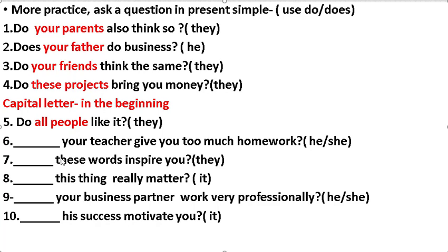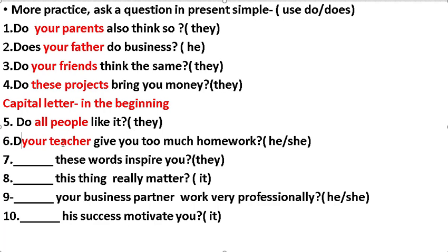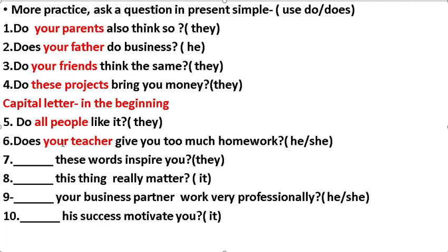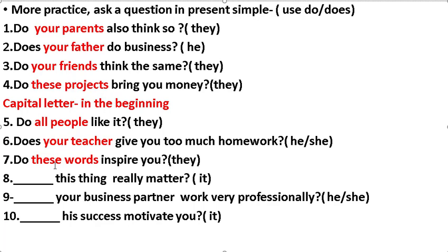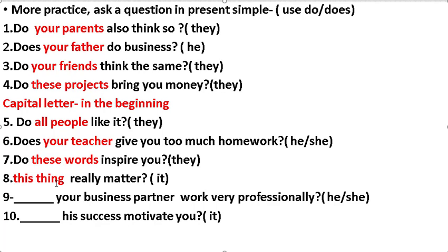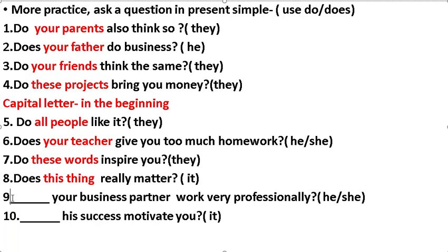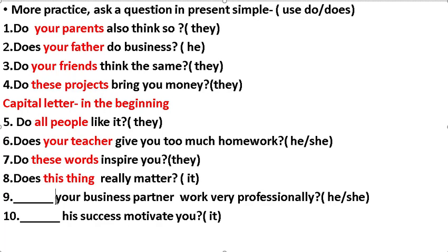Number six: your teacher give you too much homework. Maybe your teacher is he, maybe your teacher is she. When we have he or she, we use 'does'. Does your teacher give you too much homework? Number seven: this word inspire you. This word — it. Does this word inspire you? Number eight: this thing really matter. This thing — it. Does this thing really matter?